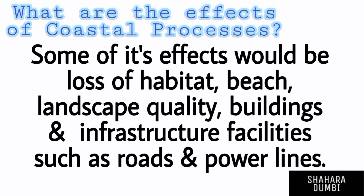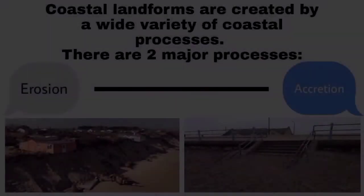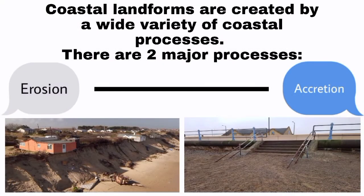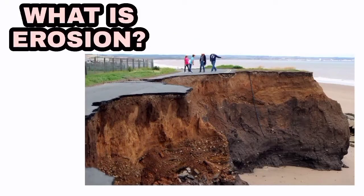Some of its effects would be loss of habitat, beach and landscape quality, buildings and infrastructure facilities such as roads and power lines. Coastal landforms are created by a wide variety of coastal processes. There are two major processes, which are erosion and accretion.